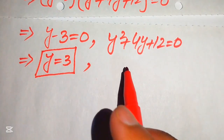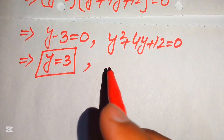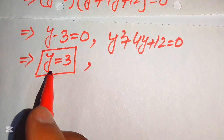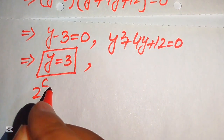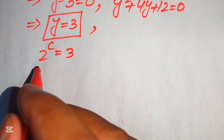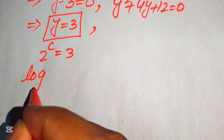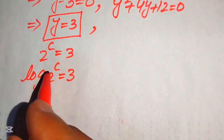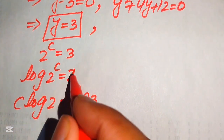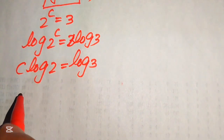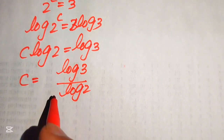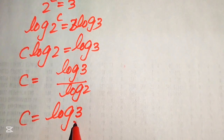From Case 1, y equals 3. Back-substituting, 2 to the power of c equals 3. Since we solve for c, we take the log of both sides: log(2^c) equals log(3). Moving c to the front: c times log 2 equals log 3. Therefore, c equals log 3 divided by log 2, which we write as log base 2 of 3. This is the first real value of c.